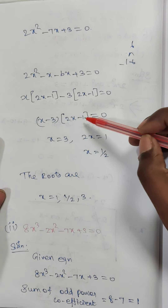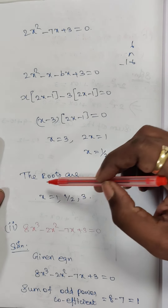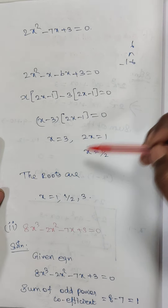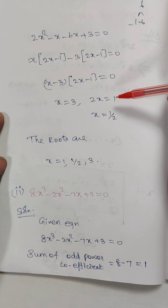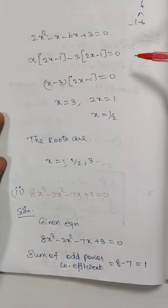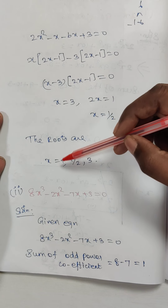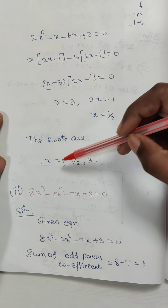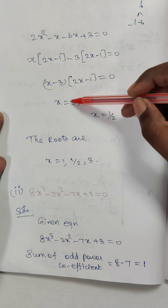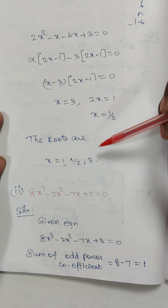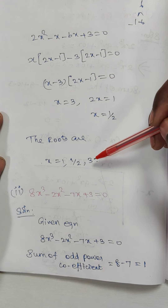So x equals 3, and 2x equals 1 giving x equals 1/2. Also, since x minus 1 was a factor, x equals 1. Therefore the three roots are x equals 1, x equals 1/2, and x equals 3. This is the answer for this first sub-question.